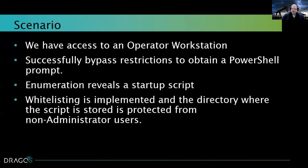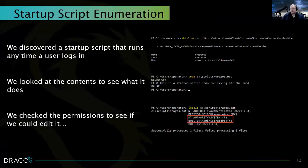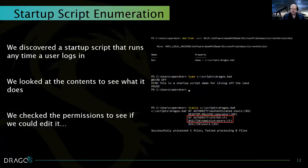So let's go through the process of discovering the startup script. We've got a PowerShell prompt and we can pass a get-item command to enumerate the registry to look for items that run at logon. In this case, we find one called dragostopbat located in the scripts directory on the C drive. Curious about what that script contains, we pass the type command on it to see the contents. In this case, it's just a simple demo script that says: 'This is a startup script demo for living off the land.'